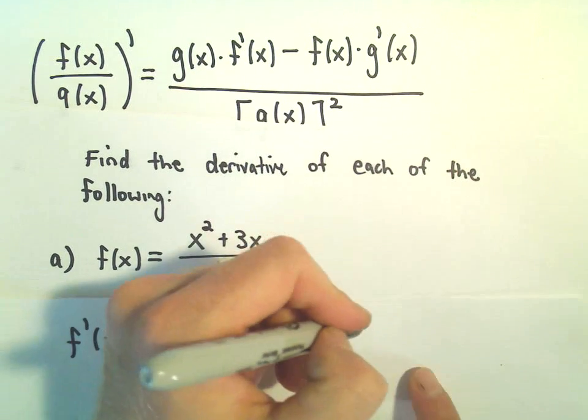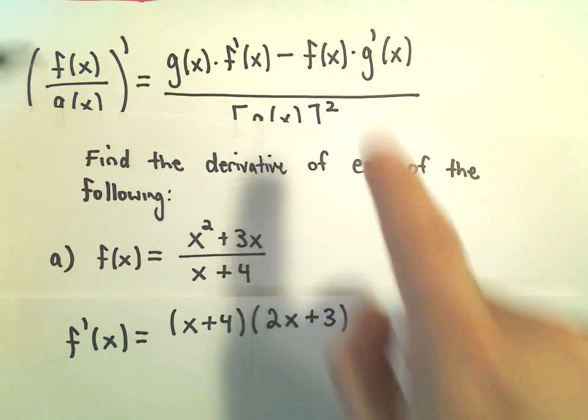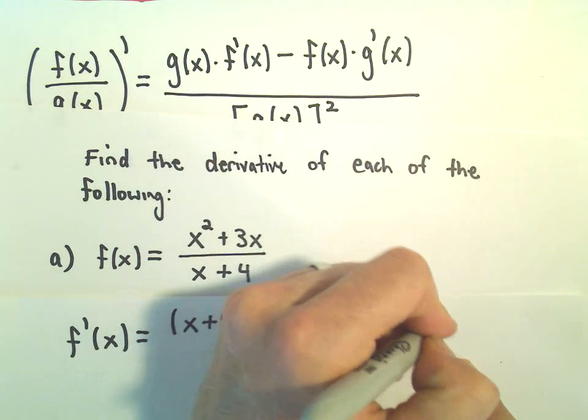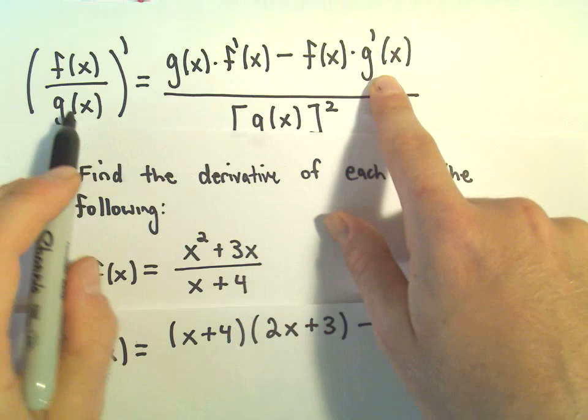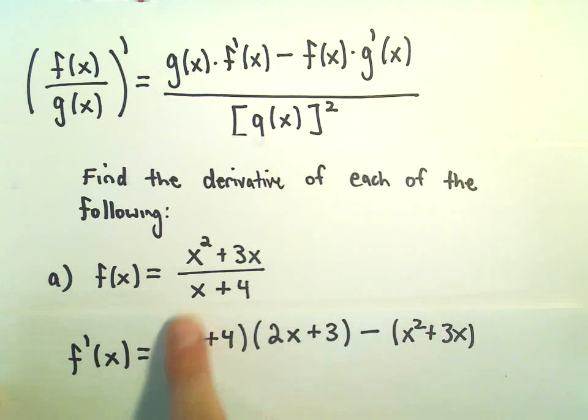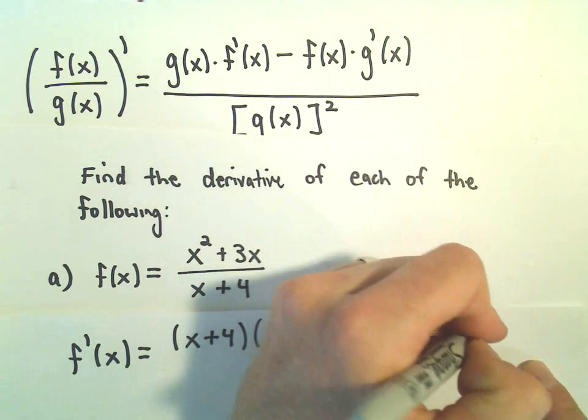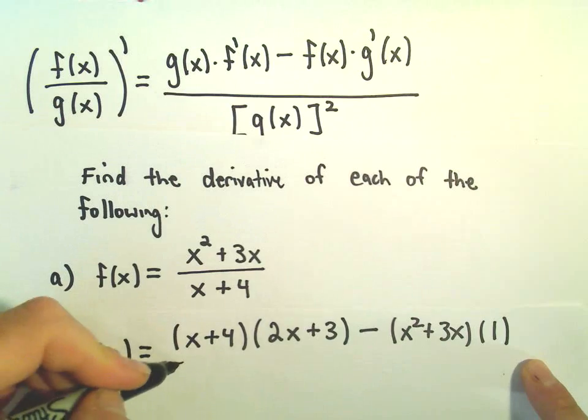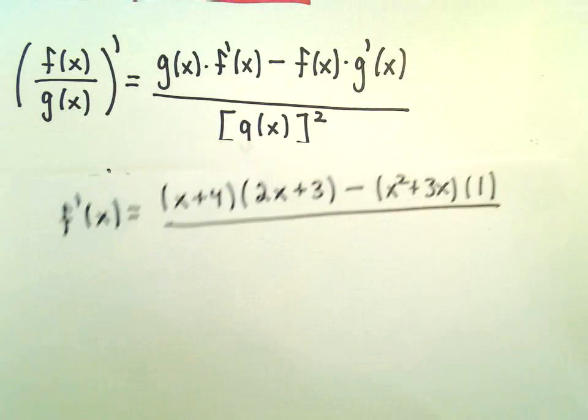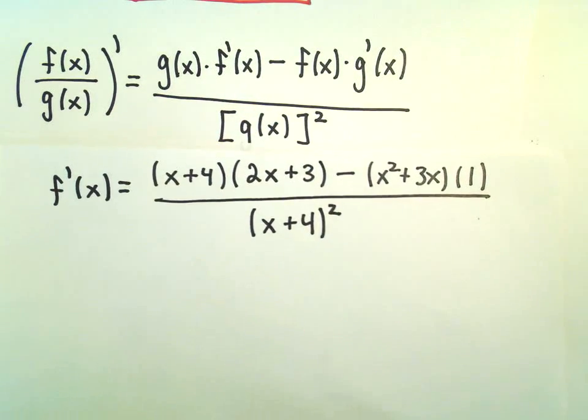And then we'll write a little minus sign. And then it says whatever's in the numerator, we just put that down. So there's our x squared plus 3x. And then it says whatever's in the denominator, we have to take the derivative of that. Well, in our denominator, we have x plus 4. So the derivative of 1x plus 4 is just going to be 1 plus 0. And then it says whatever's in the denominator, we just square that. So again, we have an x plus 4.